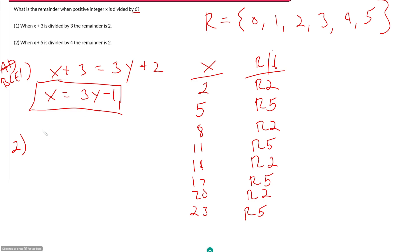What about our second statement? This says when x plus 5 is divided by 4, the remainder is 2. So here we're saying not x, but x plus 5 is equal to 4z plus 2, where z is a different quotient. We don't necessarily know they have the same quotient. So x plus 5 equals 4z plus 2, which means x would be equal to 4z minus 3.